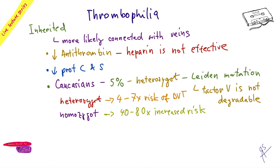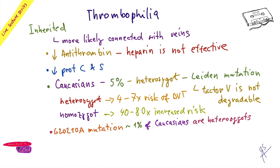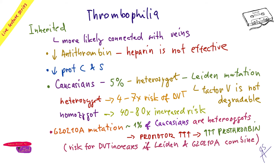You can also have the G20210A mutation. This condition is named like this and sometimes appears on tests. It affects about 1% of Caucasians. These people also form too much thrombin, but the reason here is a nucleotide exchange in the promoter region, which increases the production of prothrombin. So these people have elevated levels of prothrombin, and that is why they have an increased risk of thrombus formation.